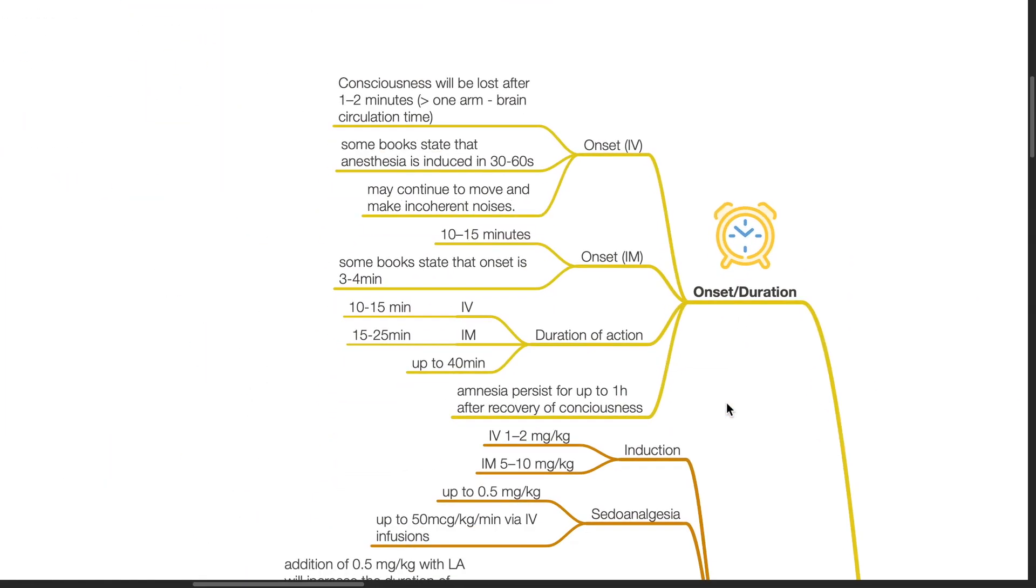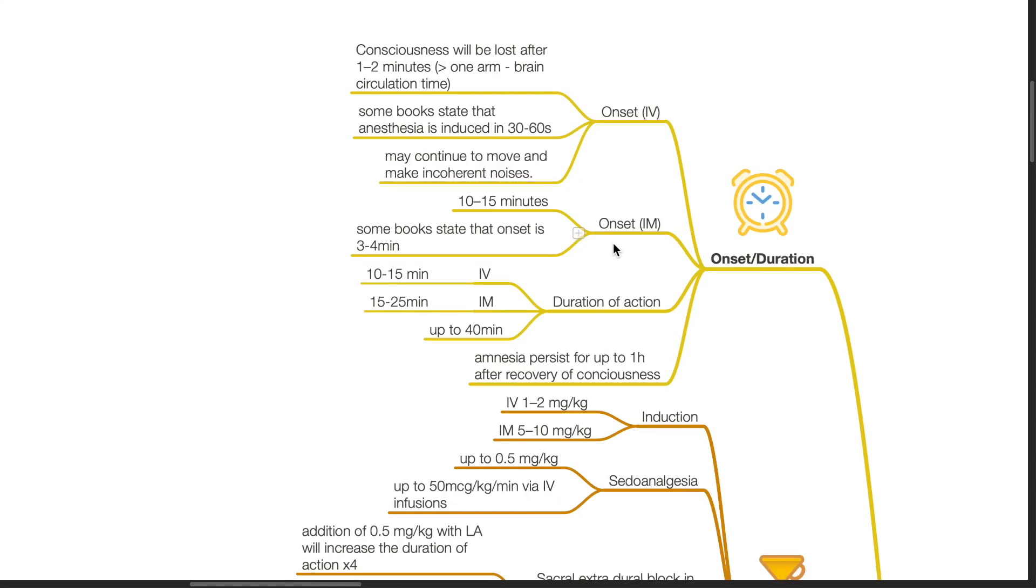Onset and duration. The onset for IV administration: consciousness will be lost after 1-2 minutes, which is more than 1 arm brain circulation time. Some books state that anesthesia is induced in 30-60 seconds. The patient may continue to move and make incoherent noises. The onset for IM administration is 10-15 minutes.